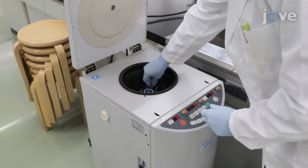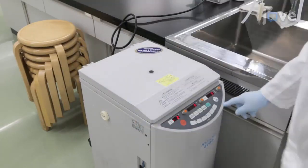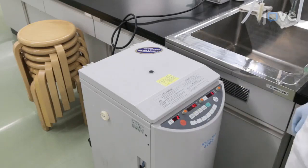Transfer 1,000 microliters of the homogenate to a 1.5 milliliter tube and centrifuge for 5 minutes at 10,000 times G at 4 degrees Celsius.